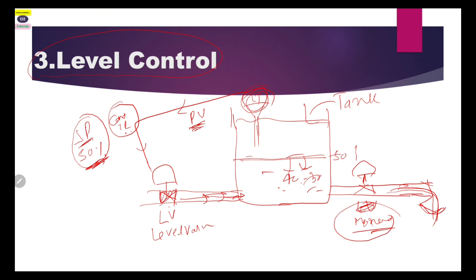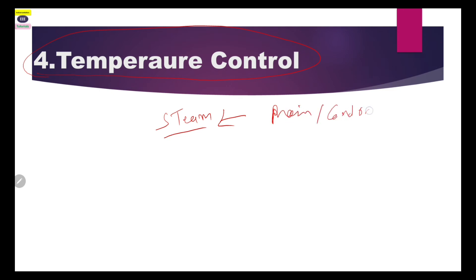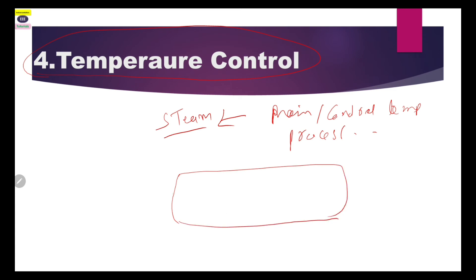The last and very important parameter is temperature control. You have heard about steam — in the oil and gas sector, steam is generally used to maintain or control the temperature of the process. For example, consider one heat exchanger.